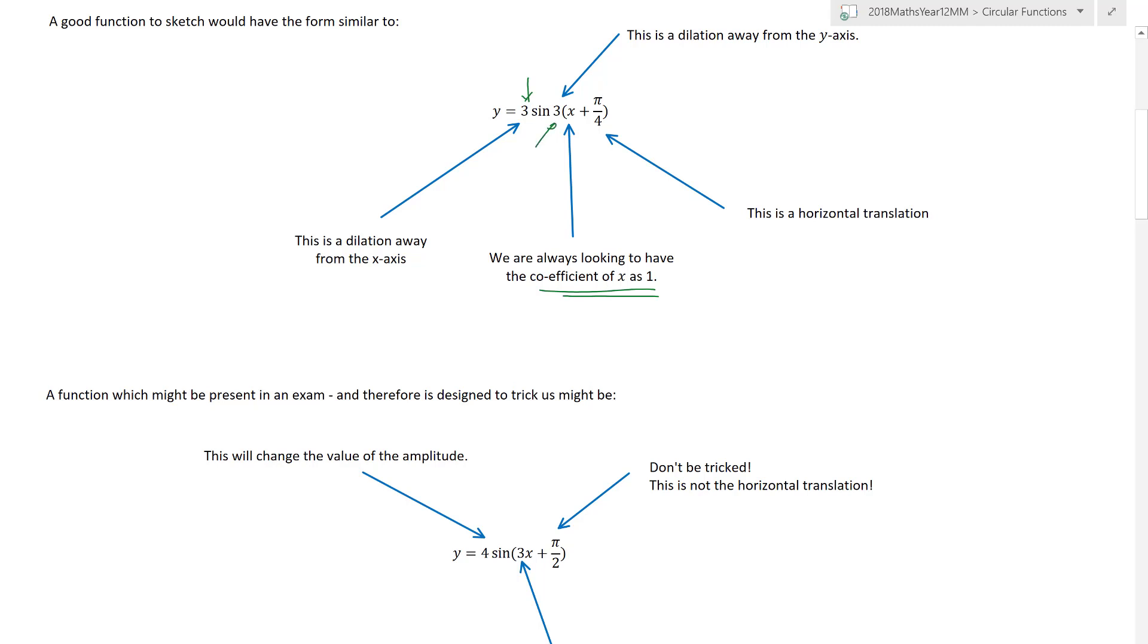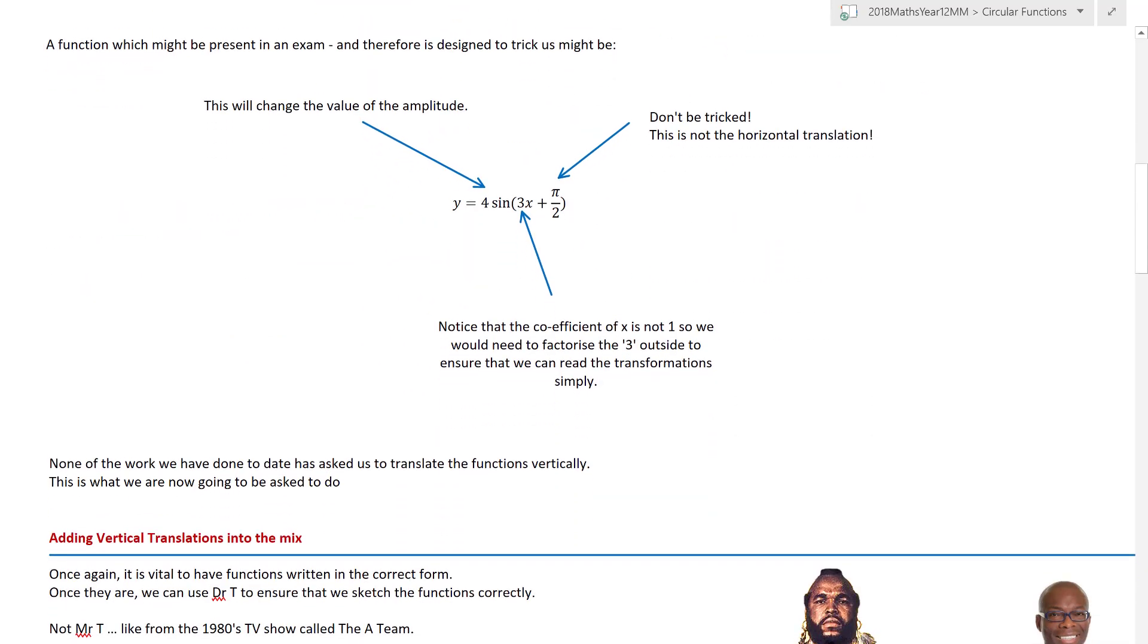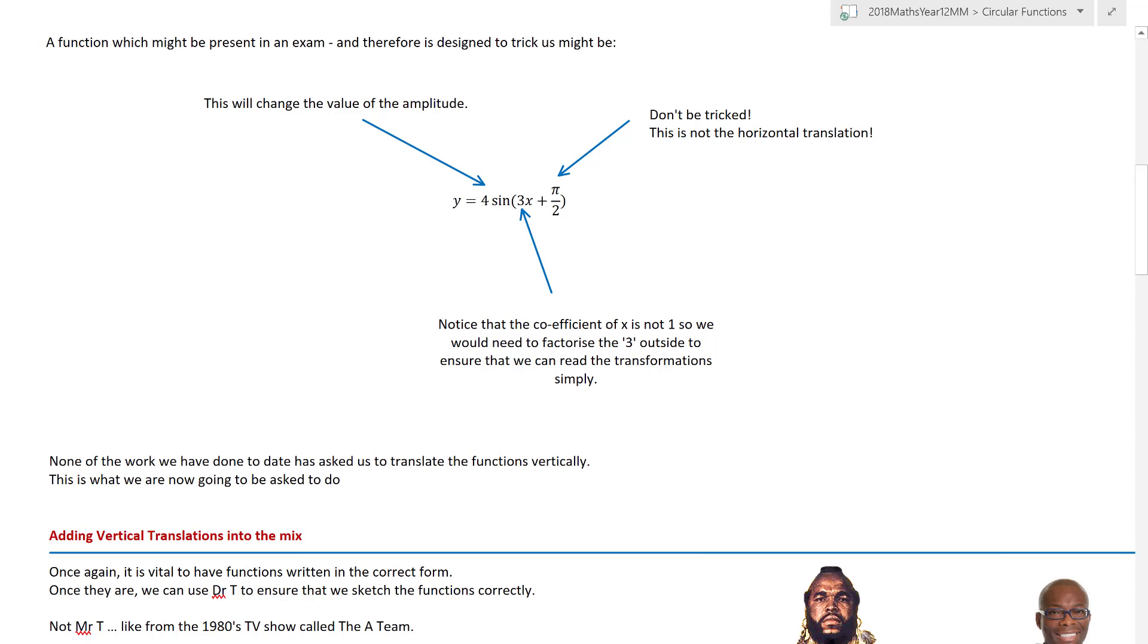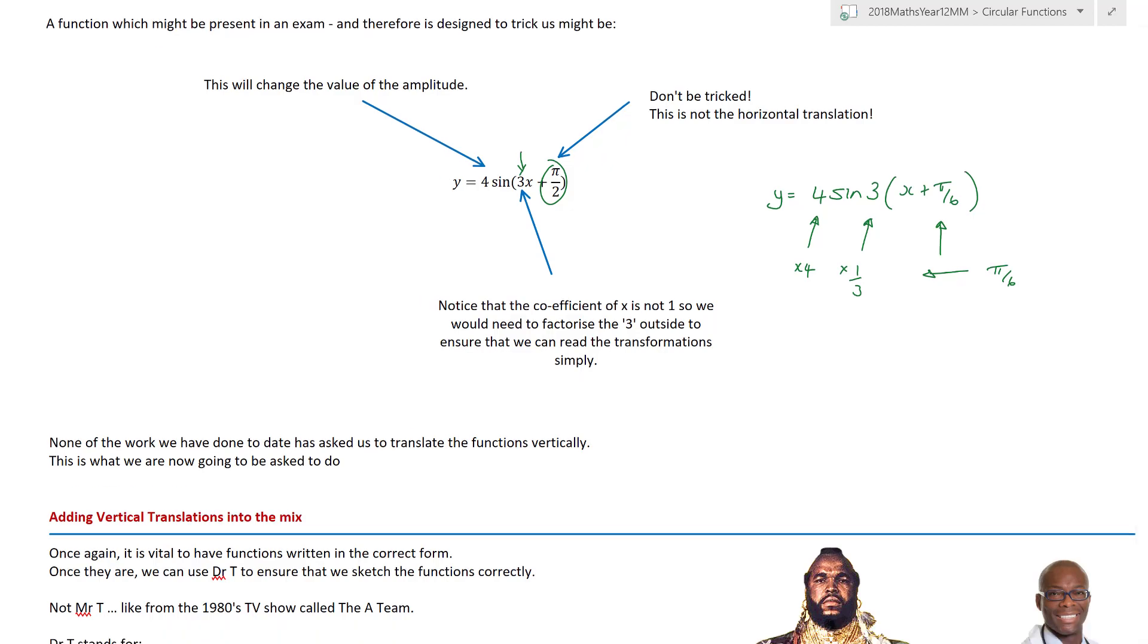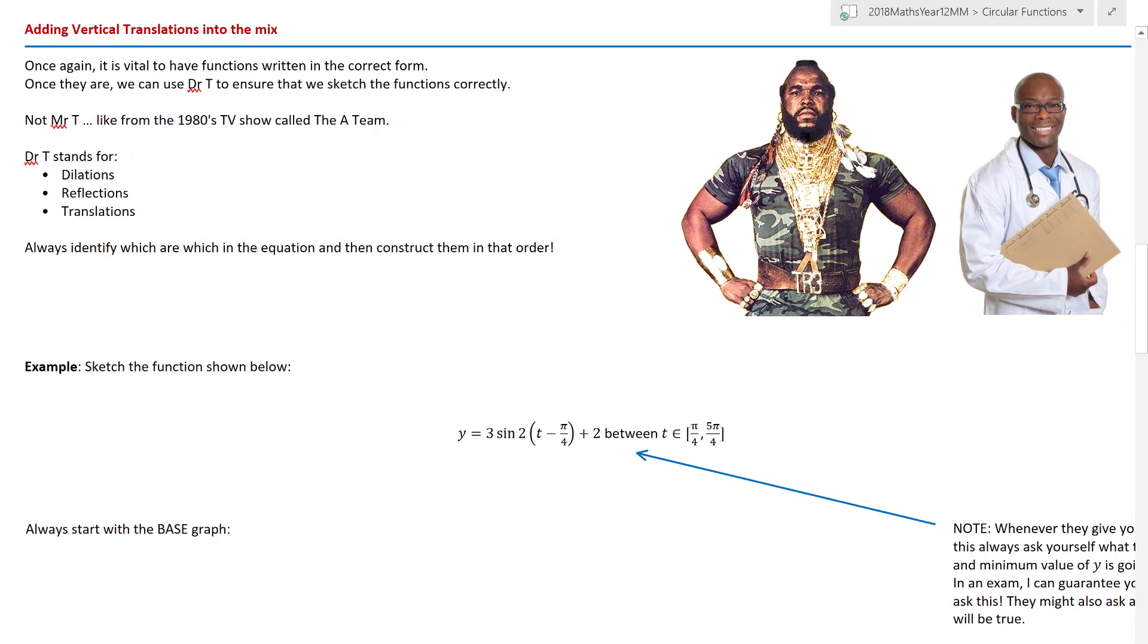But as I say here the first value is a dilation from the x-axis. The second value, this 3, is a dilation from the y-axis and that is a horizontal translation. In an exam it's never going to give it to you in the nicest form. I can guarantee you it'll try and trick you and because math is a trick it shows the difference between understanding and regurgitation. Whenever you have the coefficient inside the bracket just move it out. Factorize it out. So I would rewrite that as y equals 4 sine, take the 3 outside the brackets, becomes x plus and then you have to divide the π/2 by 3 to give you π/6.